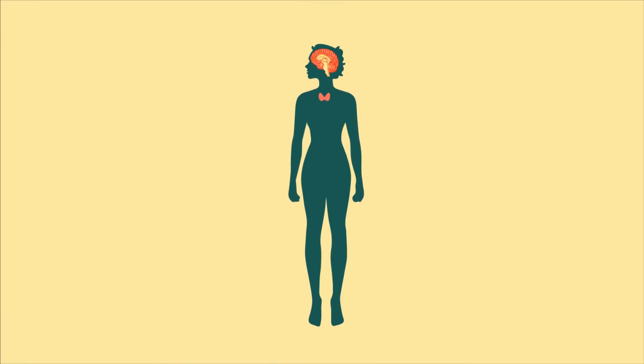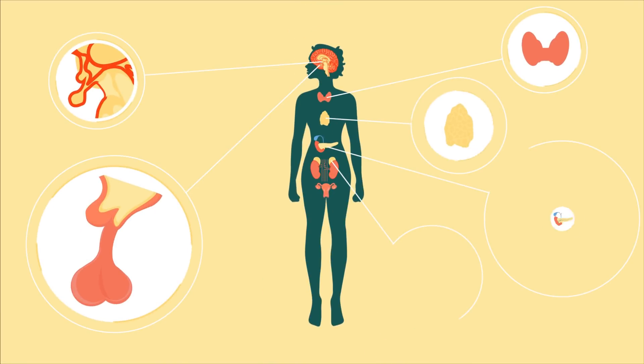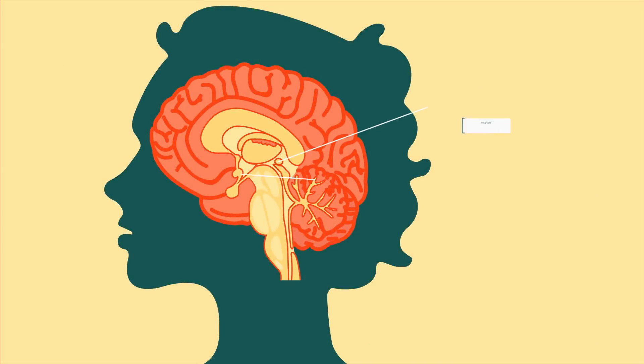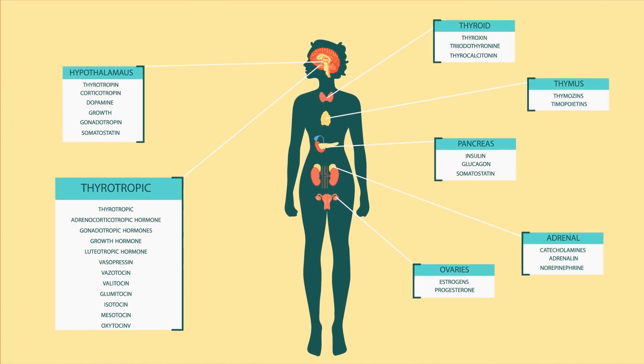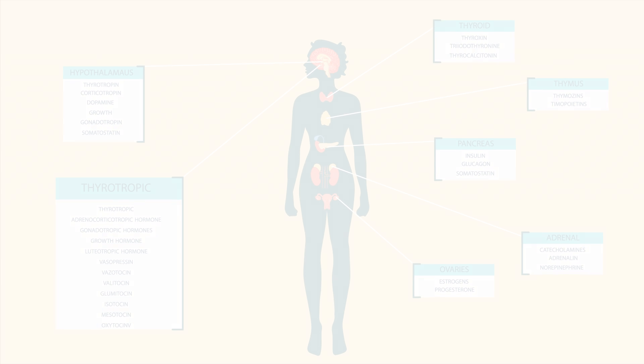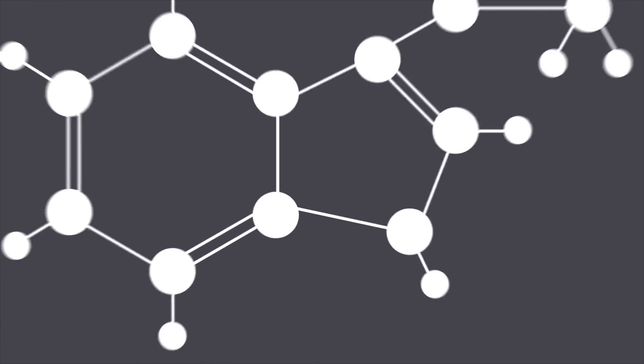Previously, researchers thought the hypothalamus was the conductor of the endocrine system. Today, we know the pineal gland sits above the hypothalamus and signals the pituitary gland to release all of our daytime hormones.